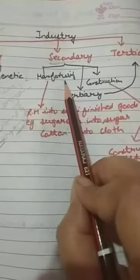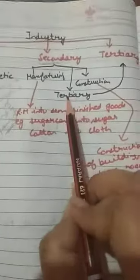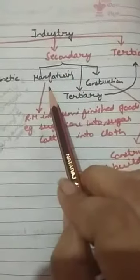Coming to the second type, that is the secondary industry. Secondary industries are of three types: manufacturing industry, construction industry, and tertiary industry. The simple definition of industry — conversion of raw material into finished or semi-finished goods — is also the definition of manufacturing industry. In manufacturing, we convert cotton into cloth by processing it.